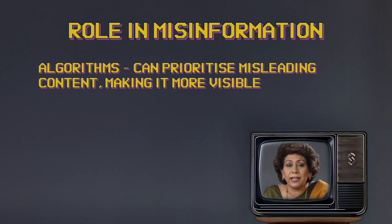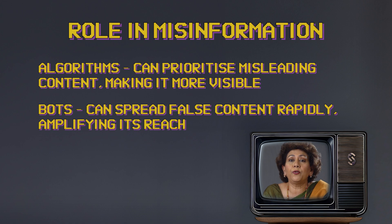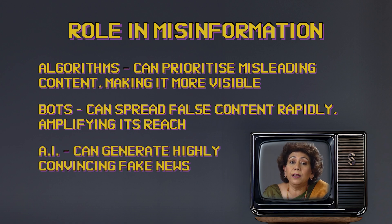Understanding these differences is even more critical in the context of misinformation. Algorithms can prioritize misleading content, making it more visible on your feed. Bots can spread this content rapidly, amplifying its reach within seconds. Meanwhile, AI can generate highly convincing fake news, blurring the line between reality and fiction. These technologies are the invisible hands shaping our online world, like digital puppet masters. But instead of strings, they're using numbers. The challenge, therefore, is to stay informed and critical. Just because something appears in your feed doesn't mean it's true or unbiased. On the internet, it seems fact-checking is as rare as a quiet moment in a joint family.